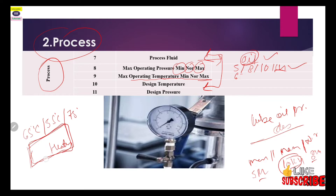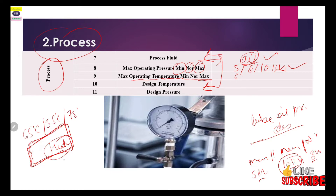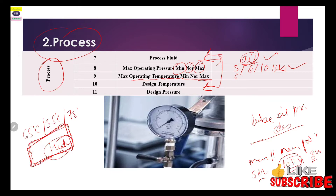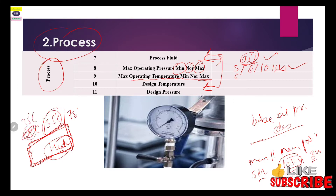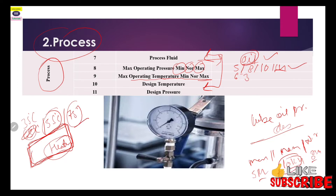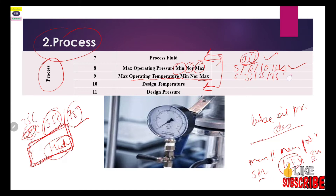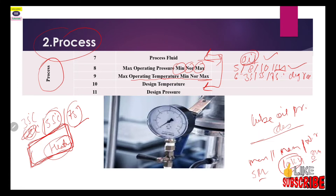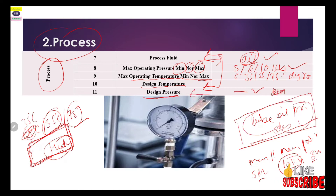The ninth point is maximum operating temperature — minimum, normal, and maximum. For example, if you have a lube oil reservoir with a heater installed to maintain temperature, the normal temperature may be 55°C, minimum 35°C, and maximum 75°C. So you write 35 minimum, 55 normal, and 75°C maximum in the data sheet.